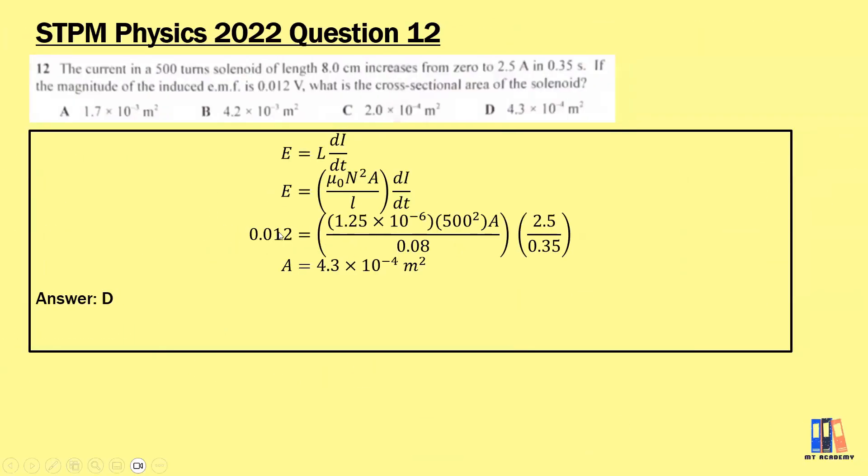The first is from 2022 Question 12. The current in a 500-turn solenoid of length 8 cm increases from 0 to 2.5 ampere in 0.5 seconds. If the magnitude of the induced EMF is 0.012 V, what is the cross-sectional area of the solenoid? We are talking about the change in current in the solenoid, so that is the phenomenon of self-inductance. We start with formula E equals L dI/dt, where L is the self-inductance of a solenoid. We have the derived formula: μ₀N²A/L. The current changes from 0 to 2.5 ampere in 0.5 seconds, so this is where we can get our dI/dt. It should not be a problem for you to find all those values besides A. Solving the equation here gives you the area equals 4.3×10⁻⁴ m². Answer is D.